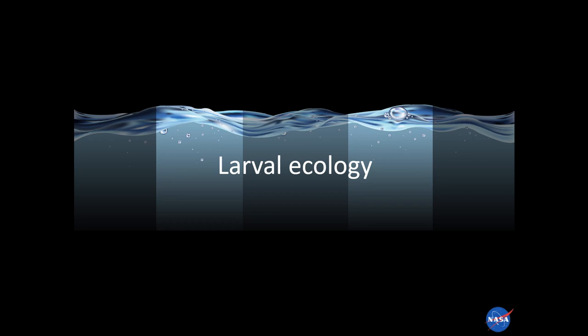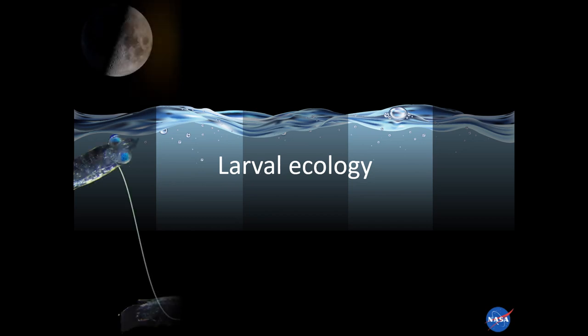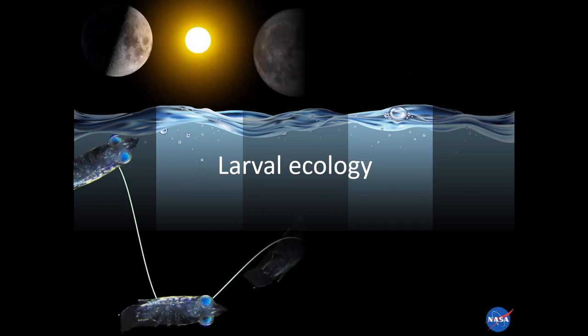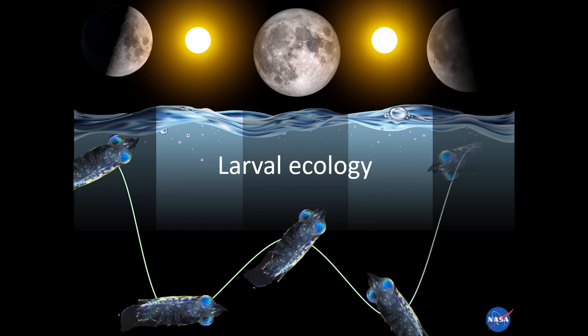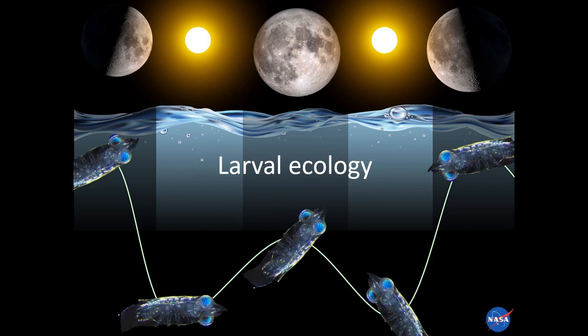Like many zooplankton, mantis shrimp larvae vertically migrate in the water column so that they come to the surface at night to feed and hide at darker depths during the day. It is unlikely that the ISR evolved for detecting moonlight since the brightness and position of the moon is highly variable and larvae don't actually come near the surface when the moon is full.